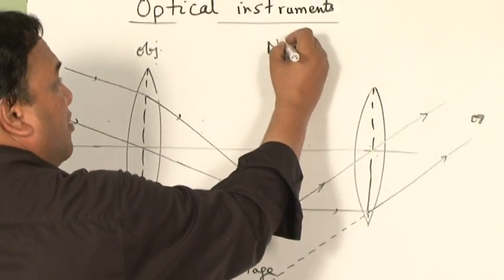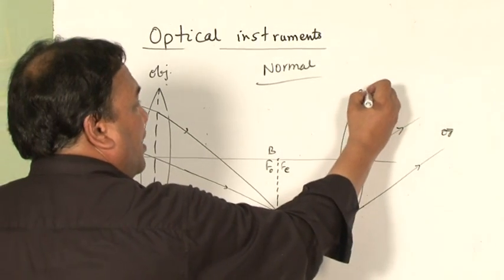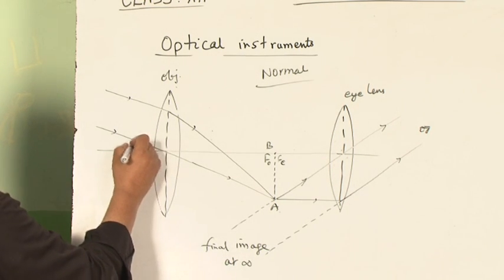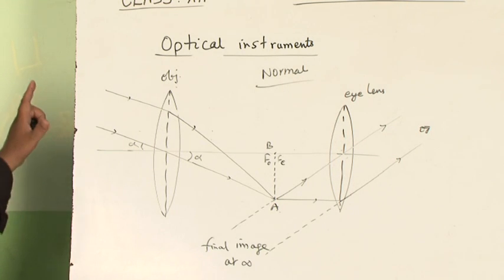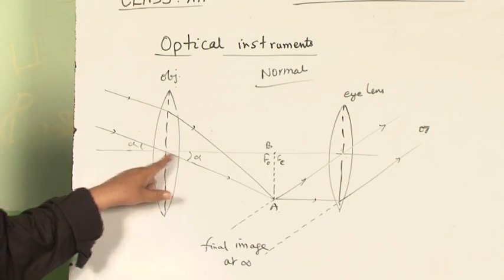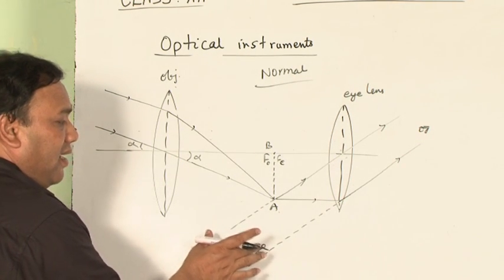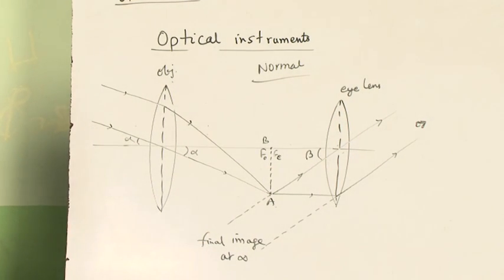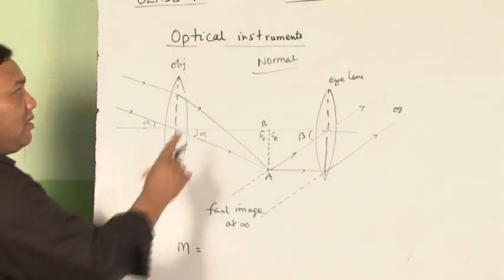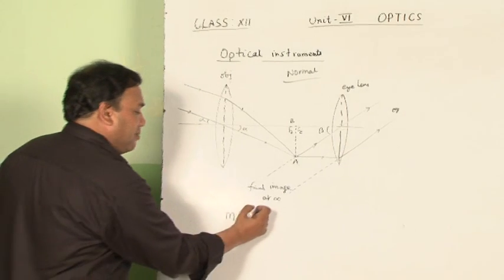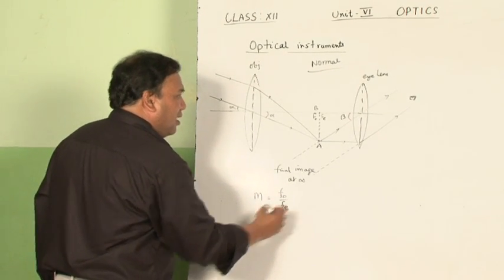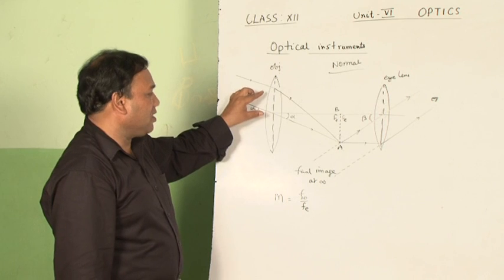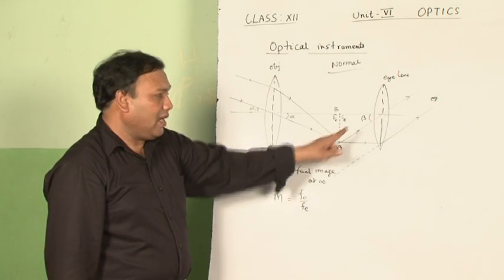This adjustment is called the normal adjustment. In normal adjustment, the final image will be at infinity. The angle subtended by the object at the objective lens is alpha, and the angle subtended by the final image at the eye is beta. We can derive that the magnifying power of this astronomical telescope in normal adjustment is m = F-O upon F-E. To increase the magnifying power, the focal length of the objective must be more and the focal length of the eye lens must be smaller.